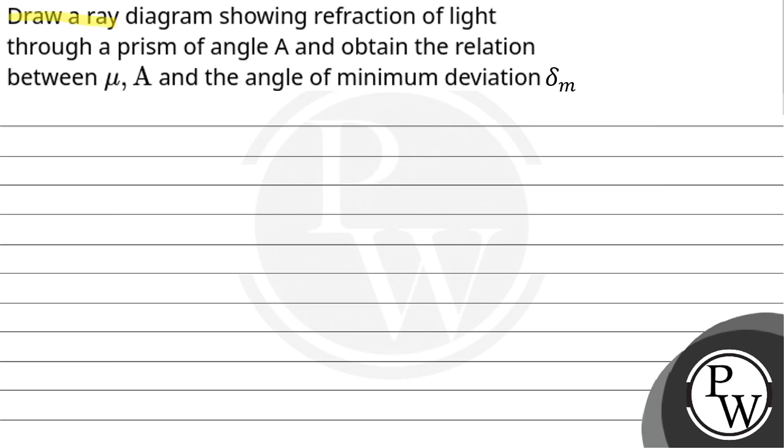Let's read the question. Draw a ray diagram showing refraction of light through a prism of angle A and obtain the relation between mu, A, and angle of minimum deviation delta m.